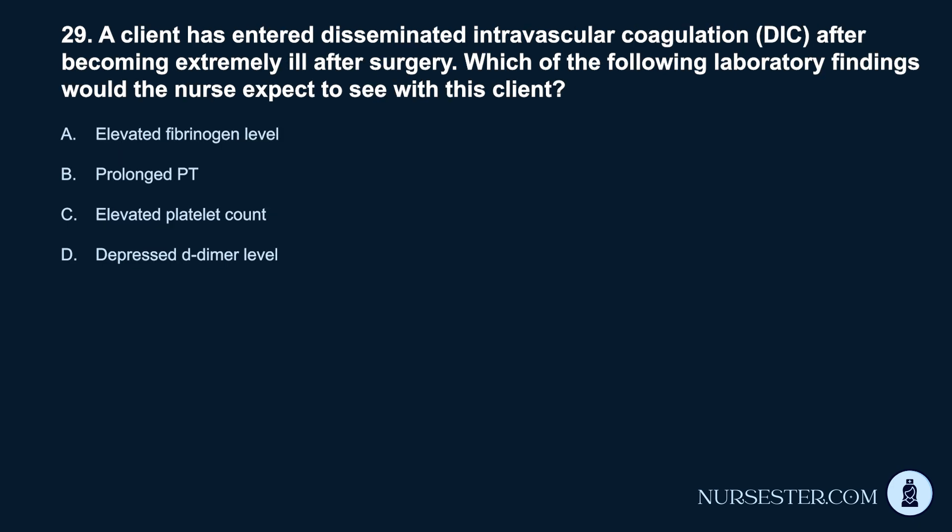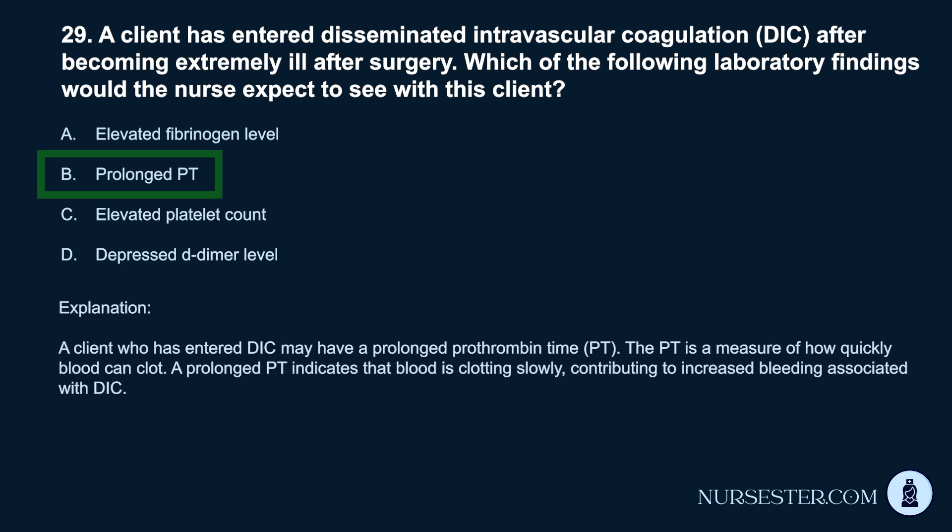Question 29. A client has entered disseminated intravascular coagulation (DIC) after becoming extremely ill after surgery. Which of the following laboratory findings would the nurse expect? a. Elevated fibrinogen level. b. Prolonged PT. c. Elevated platelet count. d. Depressed D-dimer level. Correct answer: b. Prolonged PT. A client who has entered DIC may have a prolonged prothrombin time (PT). The PT measures how quickly blood can clot. A prolonged PT indicates that blood is clotting slowly, contributing to increased bleeding associated with DIC.